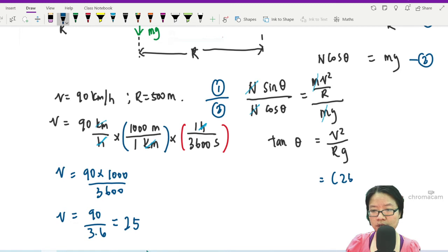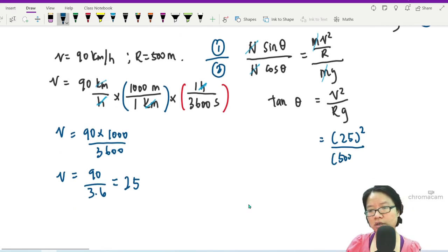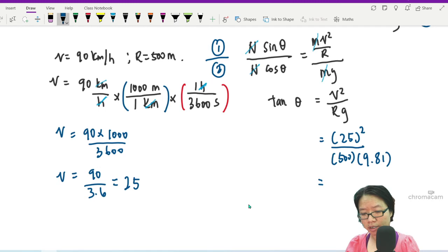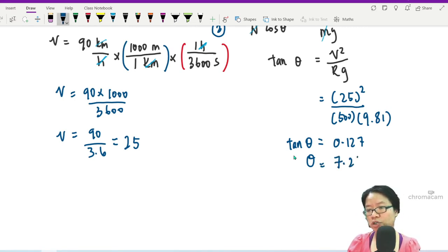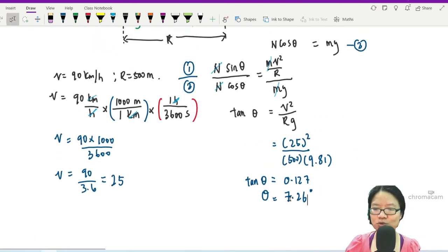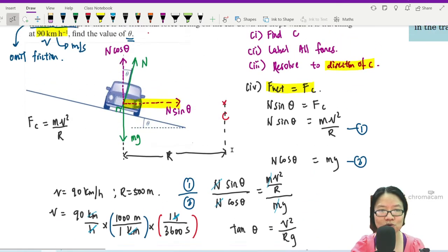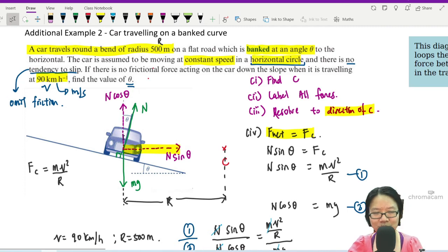From here, this will be 25 squared over r is 500 meters, so I'm going to put 500 here times 9.81. 25 squared divided by 500 divided by 9.81, this will be 0.127. Tan θ—so what are we looking for? We're looking for theta, so you can take the inverse tangent of this answer, and that will give you 7.26 or 7.3 degrees. Of course this cannot be too big—this is just a normal road you build on a ramp going home.